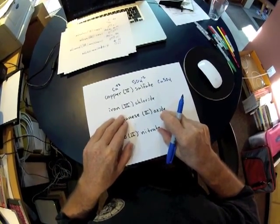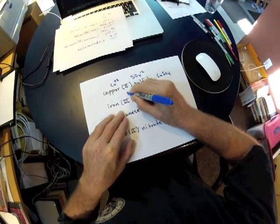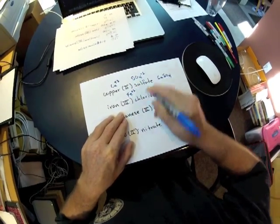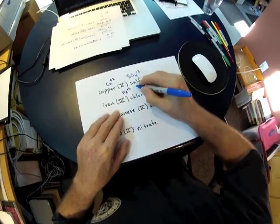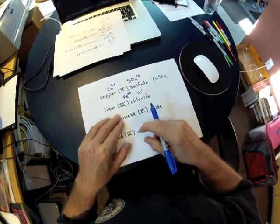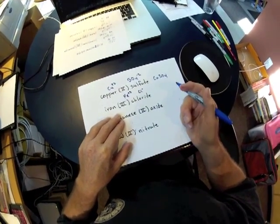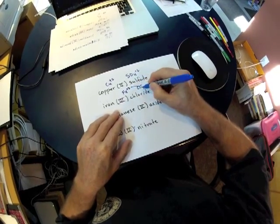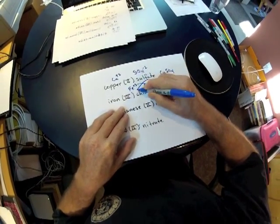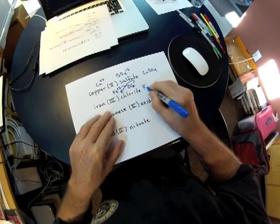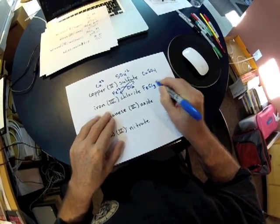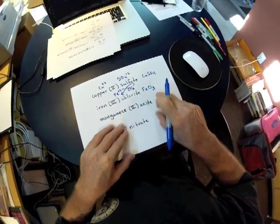The next one down is iron 3 chloride. So I write the iron 3, that's Fe plus 3, and I write down the chloride. If I prefer, I can use drop charge. The 3 has to come down here, and this one is going to go here. So we're going to end up with FeCl3, iron 3 chloride.